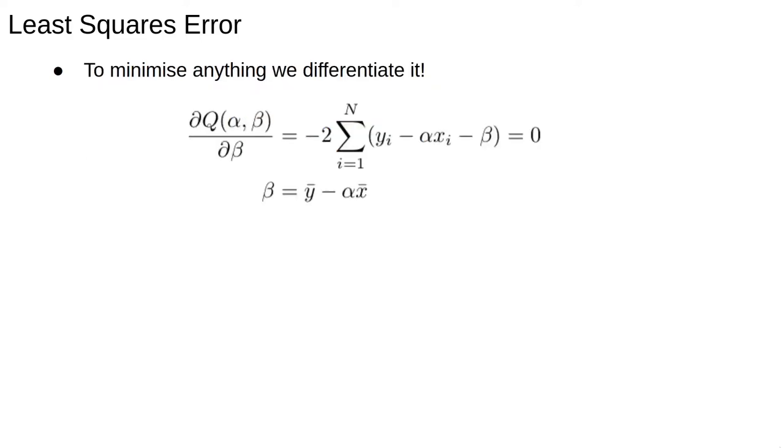This is actually possible to solve analytically by differentiating the error function with respect to α and β. Differentiating with respect to β allows us to solve for the intercept term. I won't go through the derivation in detail, but it turns out that the intercept is given by solving the equation of the line using the average values of x and y.